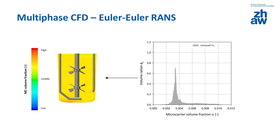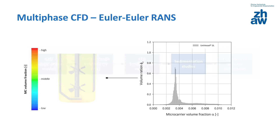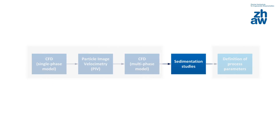Microcarrier distribution is calculated using multi-phase Euler-Euler-RANS simulations. Finally, the sedimentation conditions of the microcarriers are determined experimentally. They are then used to specify optimum impeller speeds in order to avoid mass transfer limitations and gradient formation while keeping shear stress as low as possible.